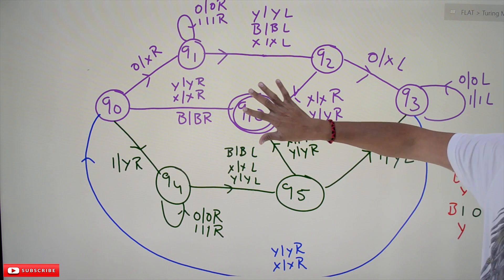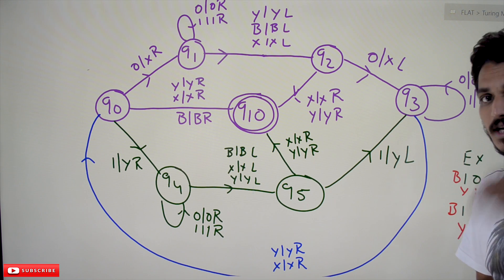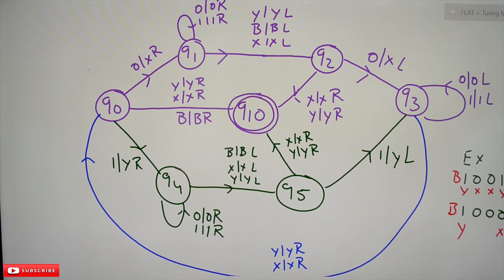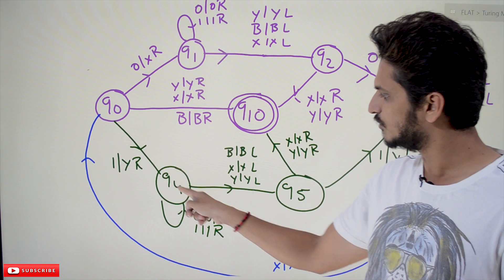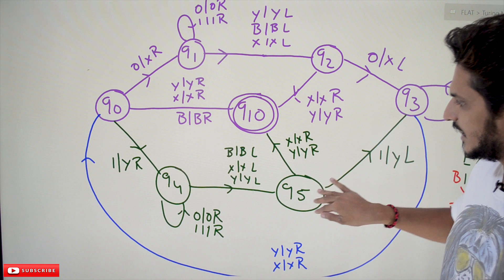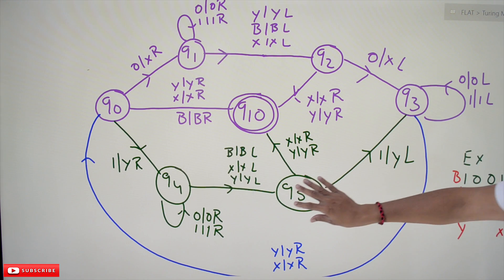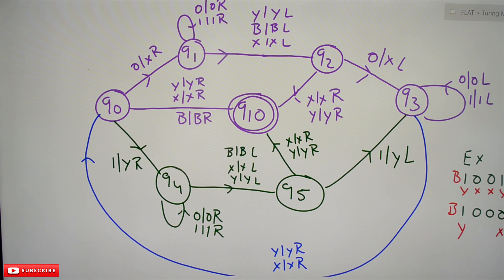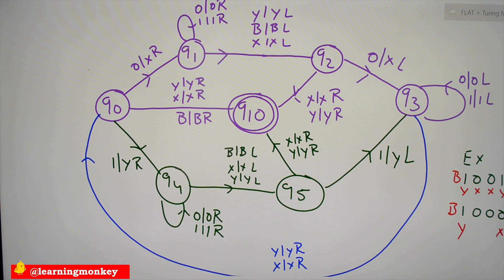This is how it halts using the halt state. Now let's look at a rejection example. If the input string '1000' is not in palindrome format — it starts with '1', so on q0 we convert it into 'y' and move to q4 state. q4 moves to the end; when we see blank, we move to q5 state and move left. We are now at position zero. On q5, the transition is defined for '1' — convert to 'y' and move left — but the input here is '0', so it is going to reject.